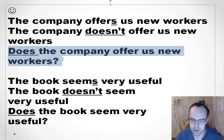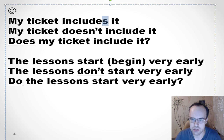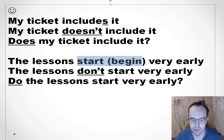'The book seems very useful. The book doesn't seem very useful. Does the book seem very useful?' Next: 'My ticket includes it' — my ticket means it, so includes. 'My ticket doesn't include it. Does my ticket include it?' The lesson starts very early — you can say 'start' or 'begin'; 'begin' sounds more formal. 'The lessons start very early' — they, so no S. 'The lessons don't start very early. Do the lessons start very early?'